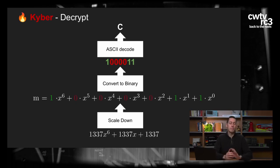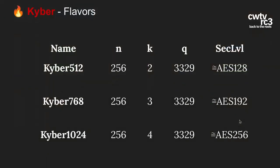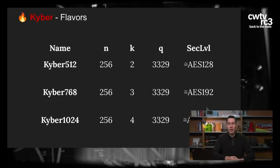Mit diesem Binärwert können wir den Buchstaben wieder dekodieren. Wir haben wieder den ASCII-Code. So entschlüsselt Kyber Daten. Kyber kann in drei unterschiedlichen Sicherheitsleveln verwendet werden: Kyber 512 bis Kyber 1024. In der Kryptographie rechnen wir immer mit Bits, manchmal auch im Vergleich mit AES. Die geringste akzeptable Sicherheit ist 128-Bit-AES. Kyber 1024 hat ungefähr 256-Bit an Sicherheit.